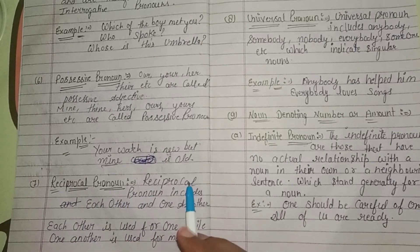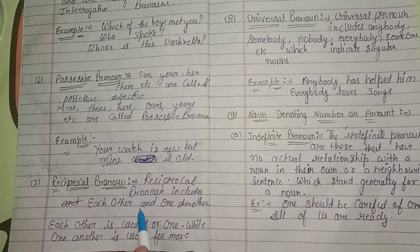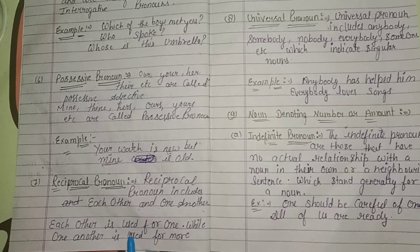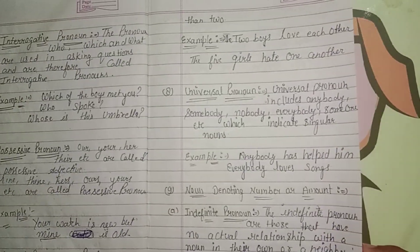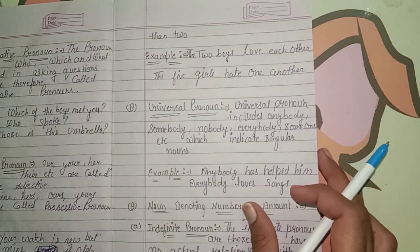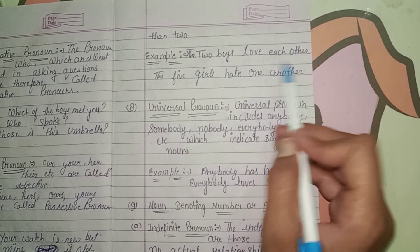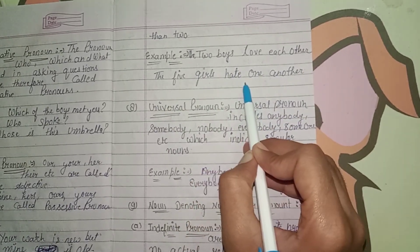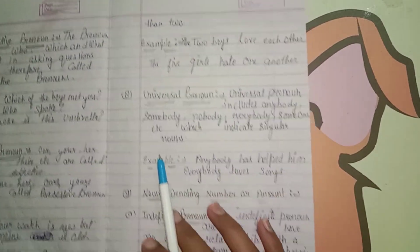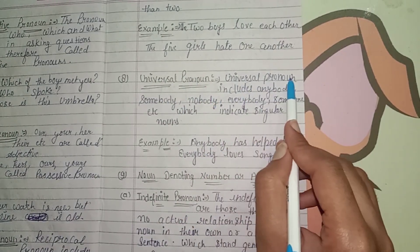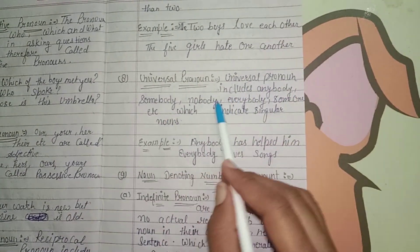Seventh is reciprocal pronoun. Reciprocal pronouns include 'each other' and 'one another'. Each other is used for two persons, whilst one another is used for more than two. For example: the two boys love each other. The five girls hate one another.